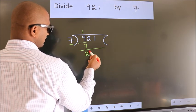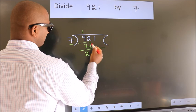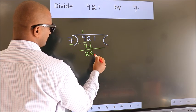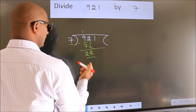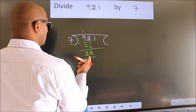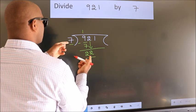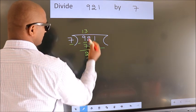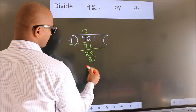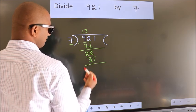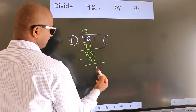After this, bring down the beside number. So 2 down, so 22. A number close to 22 in 7 table is 7 threes 21. Now we subtract. We get 1.